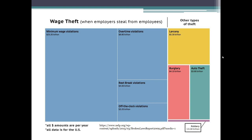If you went to the Raleigh Police Department and said, I want to see your burglary unit — oh, right here, here they are. I want to see your auto theft unit — great, here they are. I want to see your minimum wage theft violation unit — they would say, we don't handle that. Maybe the Department of Labor does, but we don't really treat it as a crime in many ways. It could be viewed as a crime, but it's not treated as one.